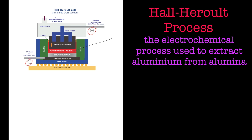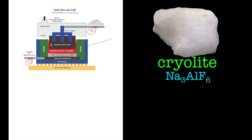Cryolite - this other compound of aluminium - is only there to make it all soluble, to make it all dissolve very well. It does unfortunately also contain aluminium, so aluminium will pop out too. What you end up with, under this immense heat and electrical current, is a molten lake of aluminium that you can actually extract - you can tap that off - and that gives you your aluminium.